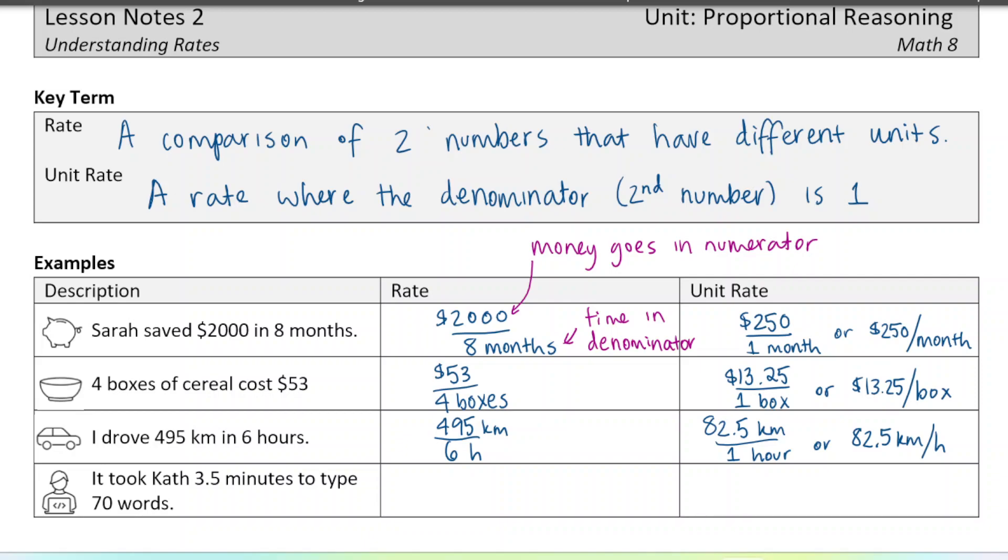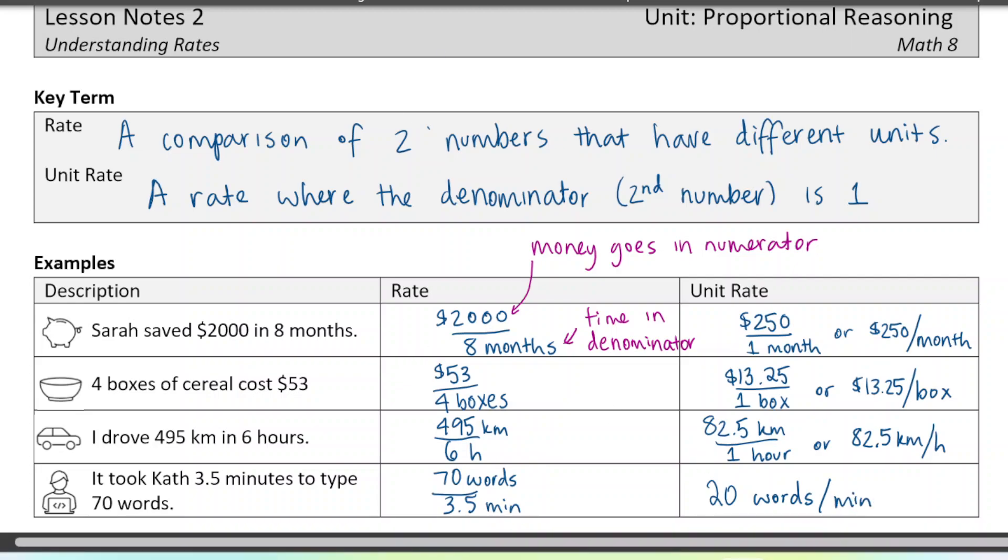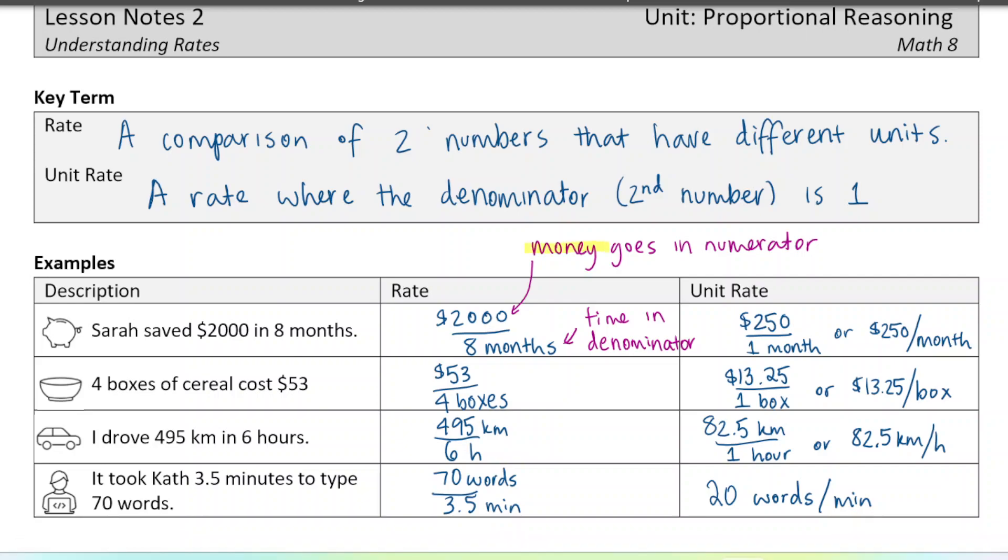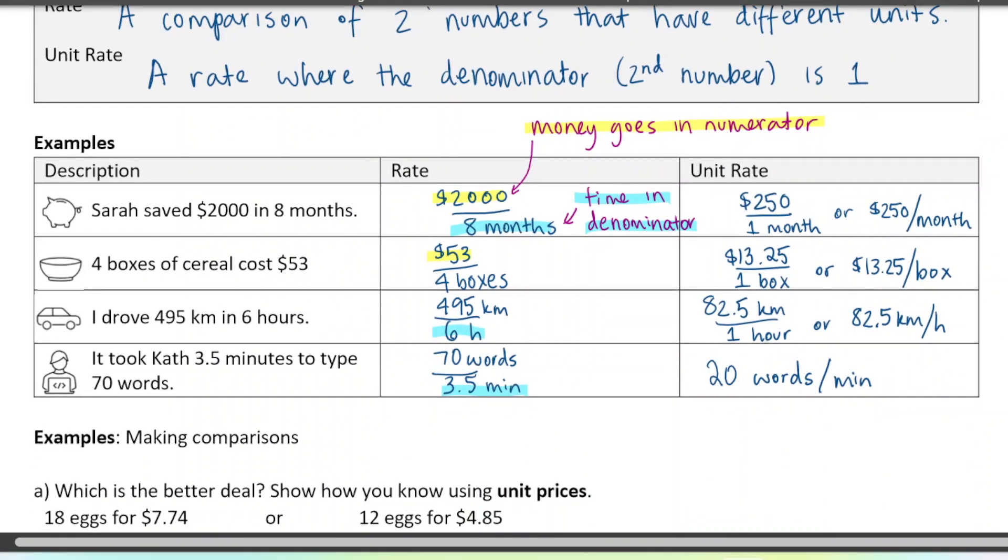Okay, it took Kath three point five minutes to type seventy words. Remember time always goes in the denominator on the bottom. So it'd be seventy words even if it's written the other way around, for three point five minutes. And if you divide those two numbers you get twenty words per minute - that's her typing speed. Okay, and again, just to stress these two points again: money always goes in the numerator, time always goes in the denominator. So wherever we had time we always put it in the denominator, and wherever we had money, even if it's written in the other order, we put it in the numerator, so we can all stay consistent with the order we write things in.